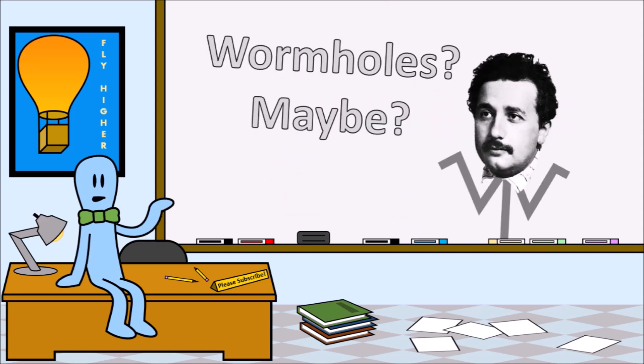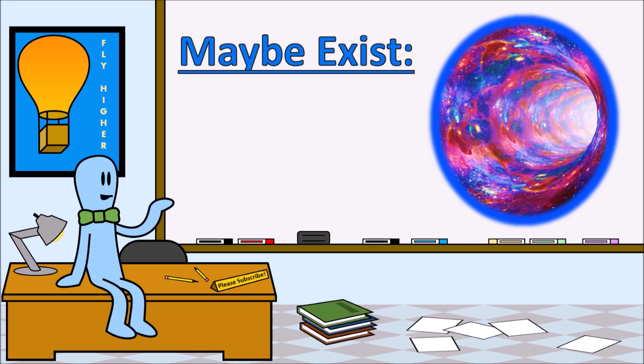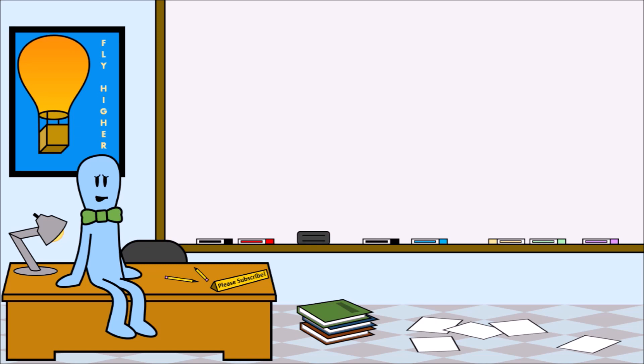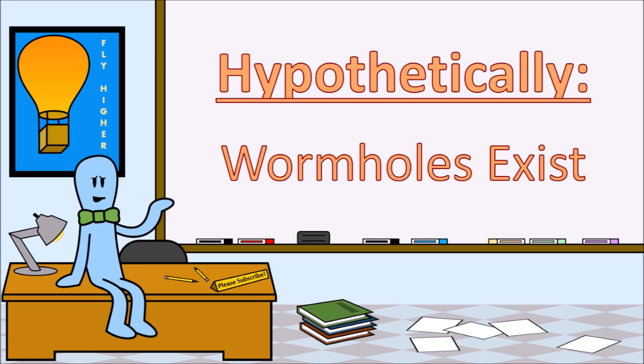While Einstein's theory of general relativity says that there could be wormholes, it doesn't say that there are wormholes. It's all theoretical. It's possible that they could exist, and there's no proof that they don't exist, but there's also no proof that they do exist. So using wormholes might not even be a possibility. But just for the sake of keeping my dream of having my own time machine alive, let's say that wormholes are a possibility. Then how would I make a time machine using wormholes?